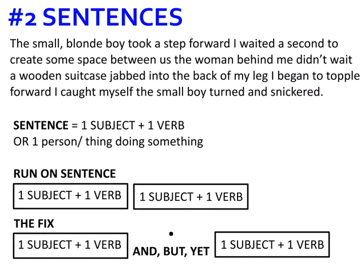Let's look at error number two. Some of you have whole paragraphs that don't have any periods in them — they're acting as one sentence. Notice when I read this how I'm struggling to find a place to breathe because the writer hasn't put any periods in: 'The small blind boy took a step forward. I waited a second to create some space between us. The woman behind me didn't wait. A wooden suitcase dropped into the back of my leg. I began to topple forward. I caught myself. The small boy turned and snickered.' The reason I'm struggling to breathe is because the writer hasn't placed clear breaths — meaning periods — for me.